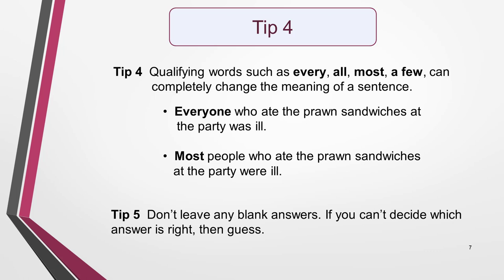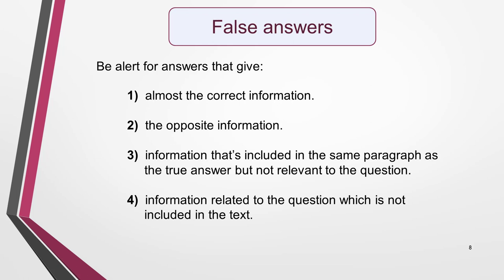Tip 5: Don't leave any blank answers. If you really can't decide which answer is right, then guess — there's at least a chance you'll guess correctly and get the mark. If you don't put an answer, the question will of course be marked wrong. It's also useful to know the types of incorrect answers that might be included: answers that give almost correct information, the opposite information, information in the same paragraph as the true answer but not relevant to the question, and information related to the question which is not included in the text.